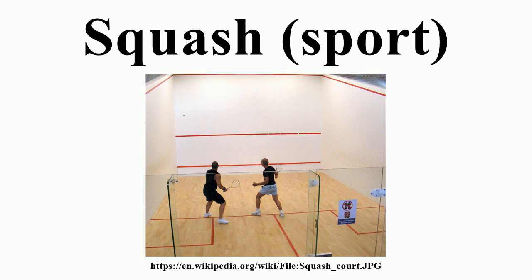The players spin a racket to decide who serves first. This player starts the first rally by electing to serve from either the left or right service box. For a legal serve, one of the server's feet must be touching the service box, not touching any part of the service box lines. After being struck by the racket, the ball must strike the front wall above the service line and below the outline, and land in the opposite back quarter court. The receiving player can choose to volley a serve after it has hit the front wall.